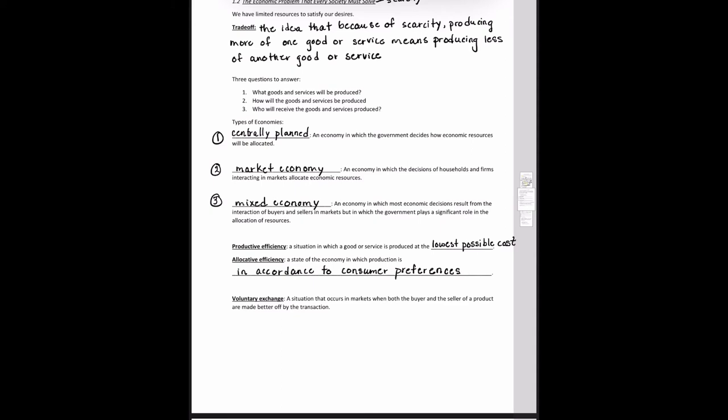Now let's talk about the different types of economies. We have three different types of economies. We have a centrally planned economy, we have a market economy, and we have a mixed economy. Centrally planned economy, that is an economy in which the government decides how economic resources are allocated. Market economy, the allocation of resources is dependent on decisions of households and firms interacting in markets. Think about the market and the interactions of buyers and sellers. Finally, we have a mixed economy in which, although most decisions may result from the interaction of buyers and sellers in markets, some decisions are also made by the government, and the government does play a significant role in the allocation of these resources. So the mixed economy has elements of both the centrally planned and market economy, and the U.S. has what we call a mixed economy.